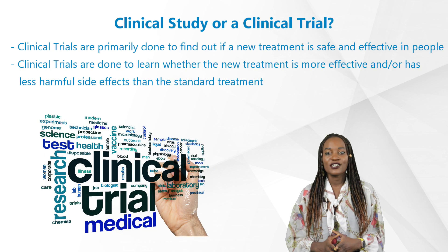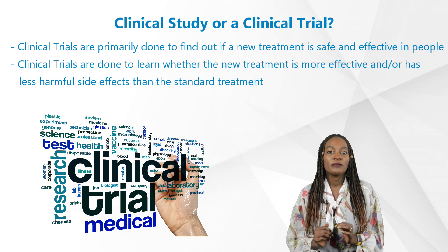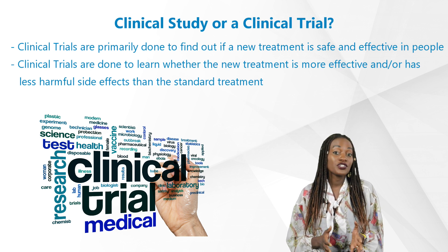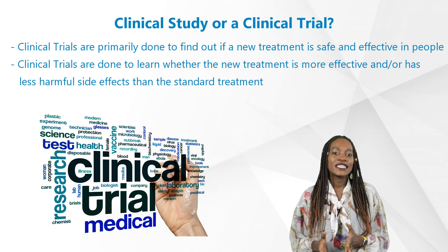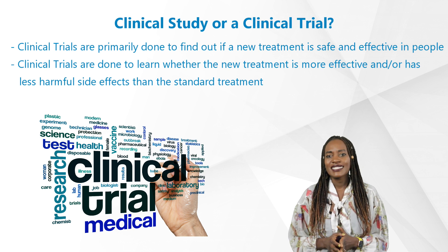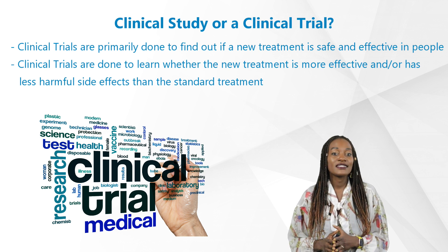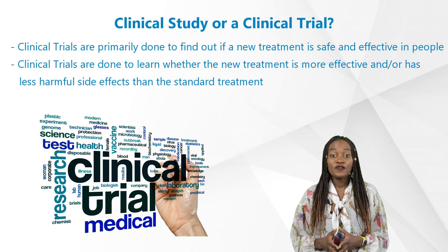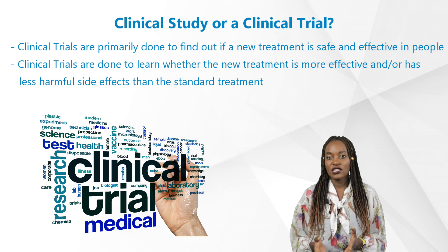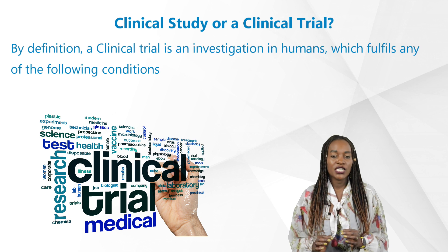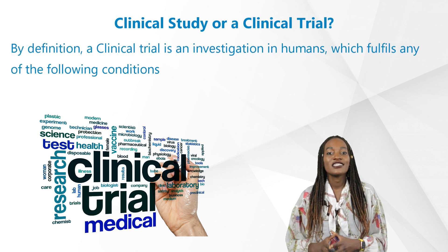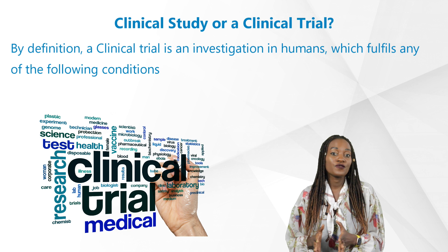The second type of clinical study is a clinical trial. Clinical trials are primarily done to find out if a new treatment is safe and effective in people. More often they're done to learn whether the new treatment is more effective and/or has less harmful side effects than the standard treatment. They're often conducted through a series of phases, which we've covered in previous videos.